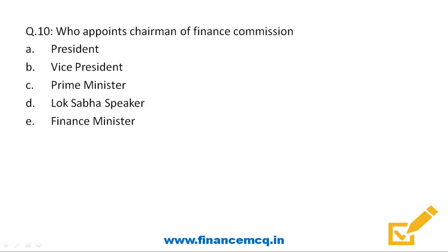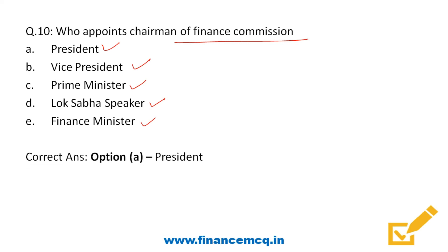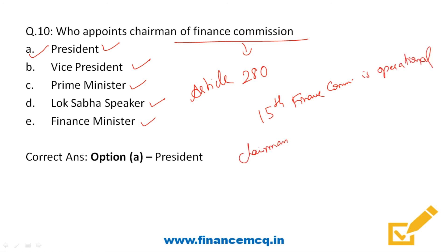Next question: who appoints the chairman of the Finance Commission? Options are President, Vice President, Prime Minister, Lok Sabha Speaker, or Finance Minister. The chairman of the Finance Commission is appointed by the President. The Finance Commission is constituted under Article 280 of the Constitution. Presently the 15th Finance Commission is in operation and its chairman is N.K. Singh.